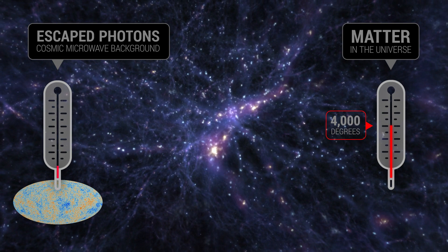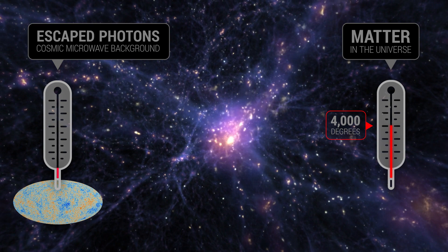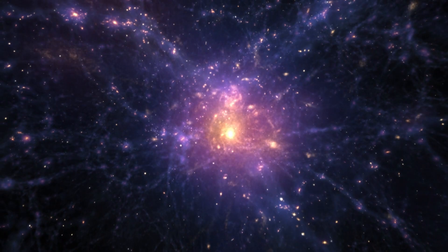Light from these new stars and galaxies burst forth into their surroundings, and these photons began stripping electrons off atoms, re-ionizing them. This is the dawn of re-ionization.